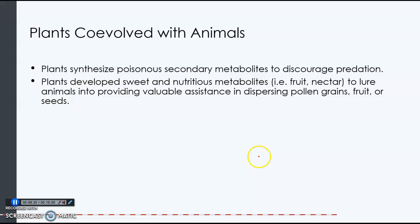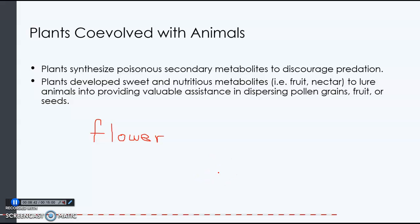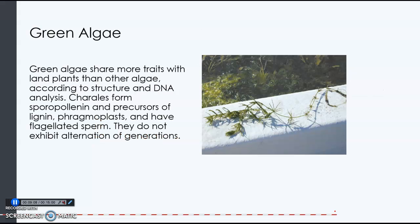Plants co-evolved with animals. For example, flowering plants evolved certain colors and scents to attract pollinators like bees, and bees evolved different adaptations to help them find flowers and get to the nectar. This is called co-evolution. We also have plants that evolved poisons to discourage predators. So animals and plants evolved side by side over the years.